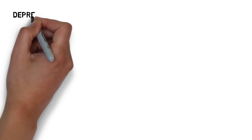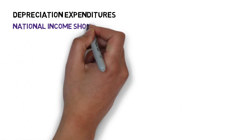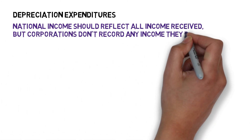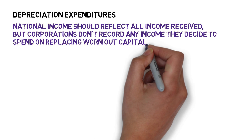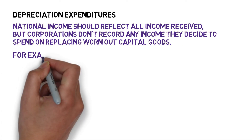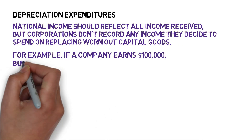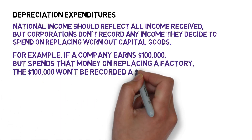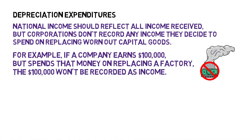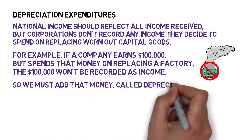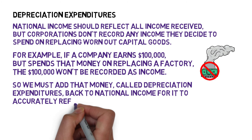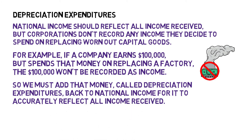The last technicality is depreciation expenditures. The issue is national income should reflect all income received, but corporations don't record any income they decide to spend on replacing worn-out capital goods. So for example, if a company earns $100,000 but spends that money on replacing a factory, that $100,000 won't be recorded as income. So we must add that money, called depreciation expenditures, back to national income in order for national income to accurately reflect all income received.